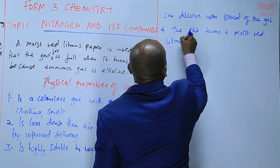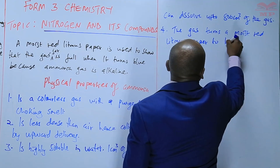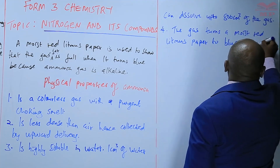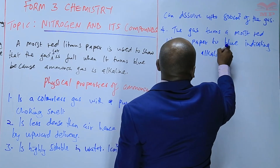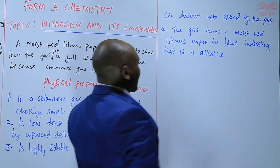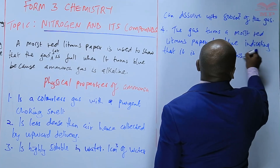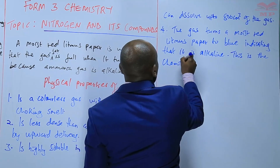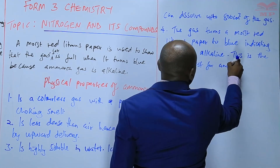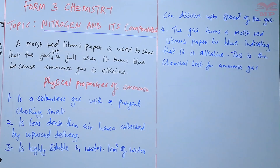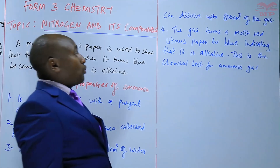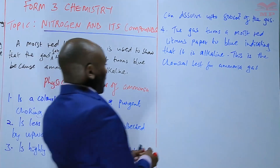The fourth property is that ammonia gas turns a moist red litmus paper to blue, indicating that it is alkaline. This is also the chemical test for ammonia gas. So those are the physical properties: a colourless gas with a pungent choking smell, less dense than air, highly soluble in water, and turns moist red litmus paper to blue.